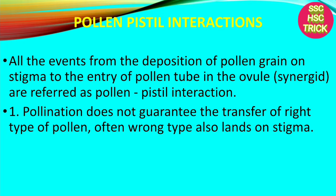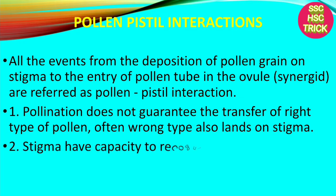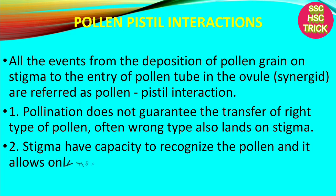Pollination does not guarantee the transfer of the right type of pollen — wrong type also lands on the stigma. The stigma has the capacity to recognize pollen and it allows only the right type of pollen.